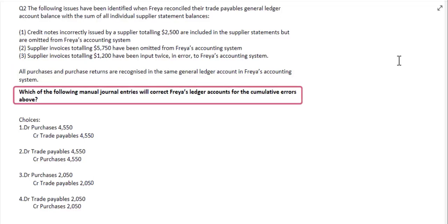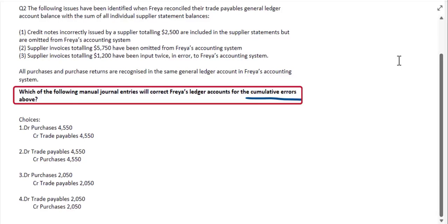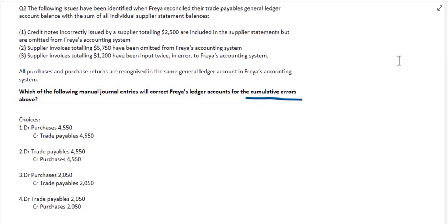All purchases and purchase returns are recognized in the same general ledger. The question asks which manual journal entry will correct Freya's ledger accounts for the cumulative errors. We need to look at each of the three issues and decide how to adjust for them. For the first issue — credit notes incorrectly issued totaling $2,500, included in supplier statements but omitted from Freya's system — there is no error here, because those credit notes which were incorrectly issued haven't been included, so we don't need to adjust for them.